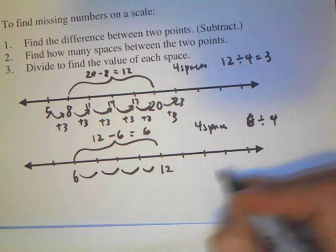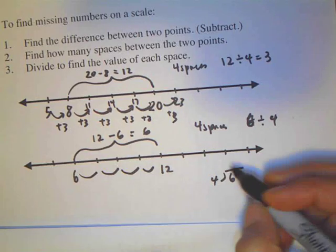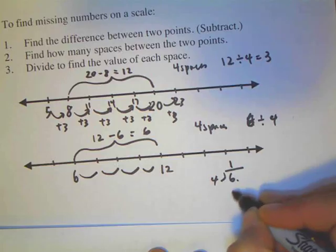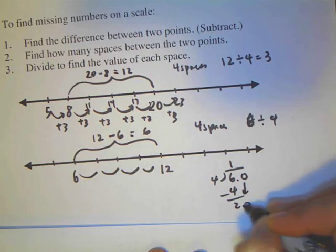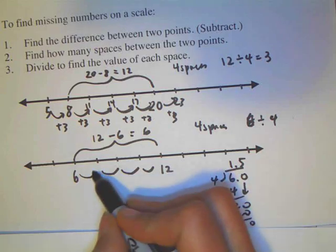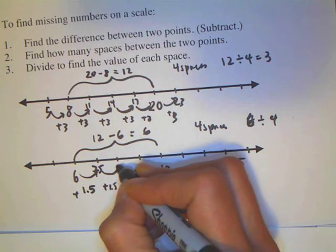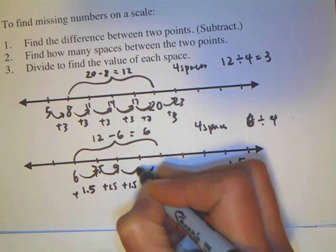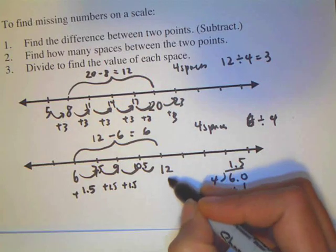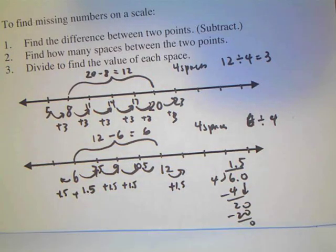So how many times does 4 go into 6? It goes in once with a remainder, giving us 1.5. So 6 plus 1.5 is 7.5, plus 1.5 is 9, plus 1.5 is 10.5, plus 1.5 is 12. On occasions you will have weird numbers — keep going up or backwards subtracting 1.5 to figure that out. Do show your work and that will help you out a lot. Good luck with that.